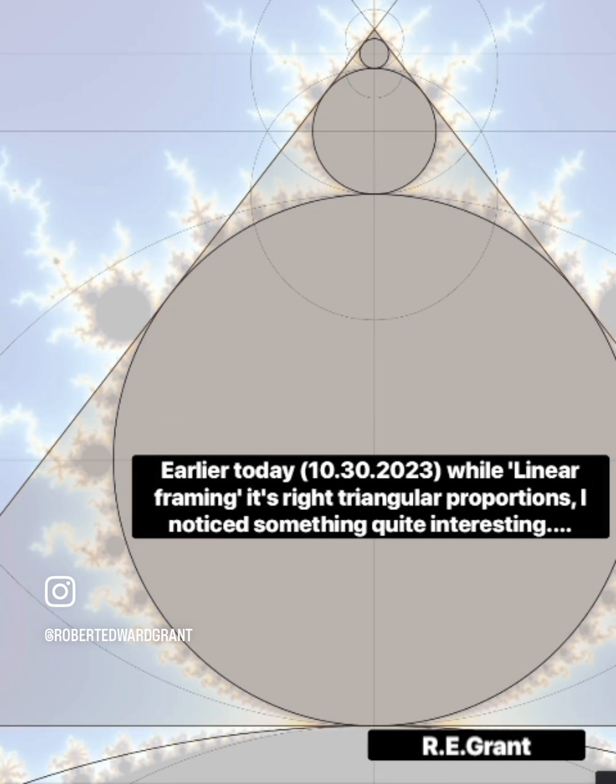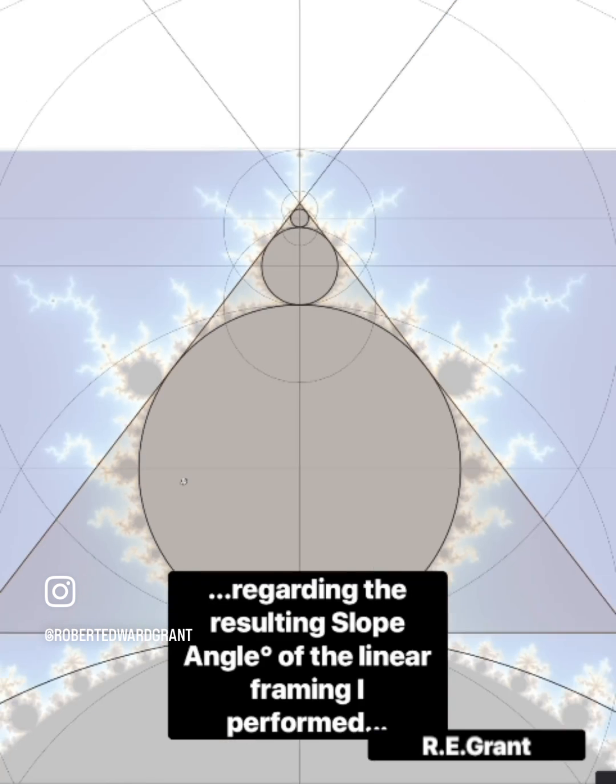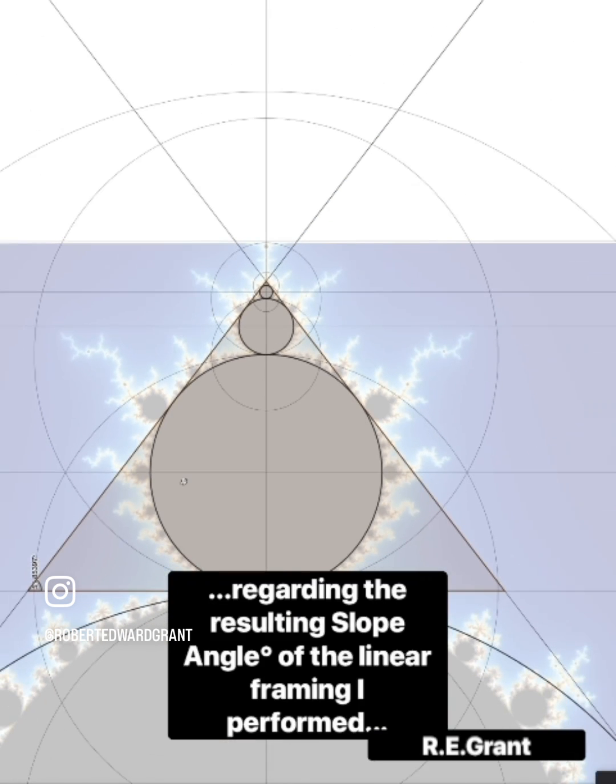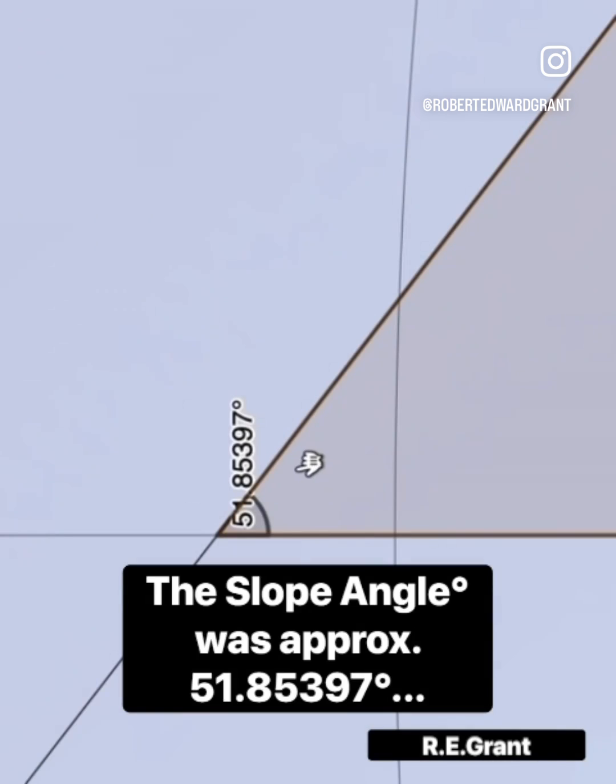Earlier today, while linear framing its right triangular proportions, I noticed something quite interesting regarding the resulting slope angle of the linear framing I performed. The slope angle was approximately 51.85397 degrees.